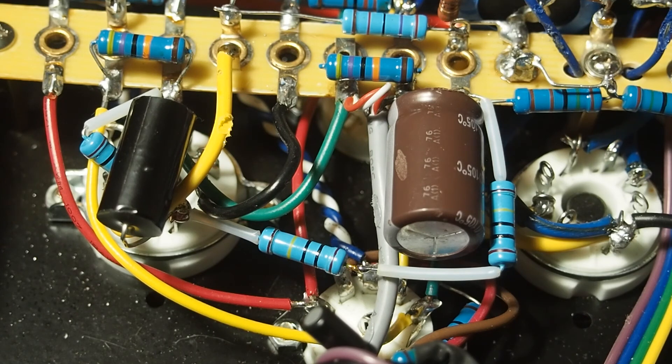The floating bias that this used, or the grid leak bias that this amp was set up in, is something they do on guitar amplifiers where you want distortion, but it's not something you want in a hi-fi amp.